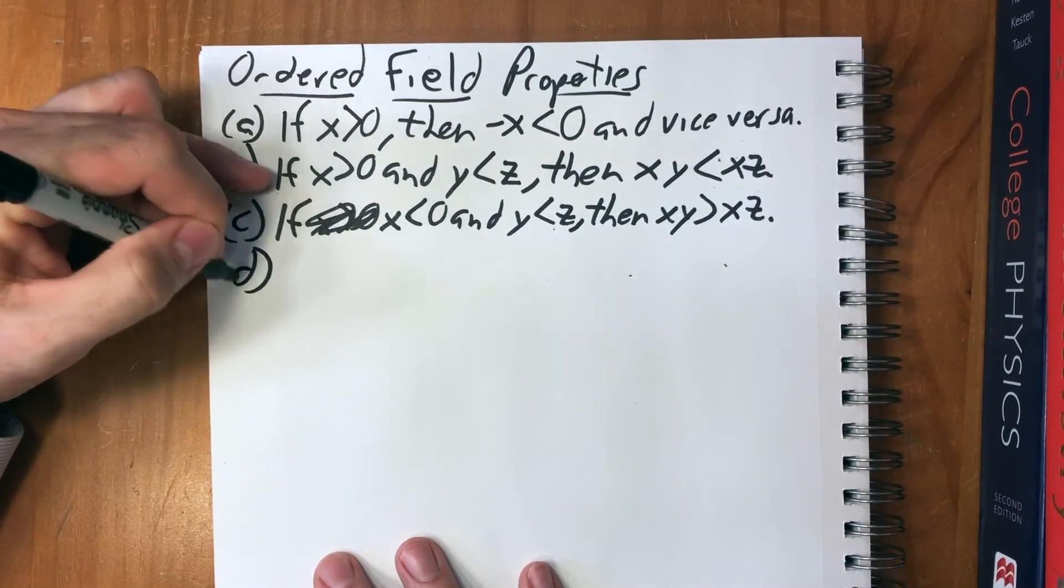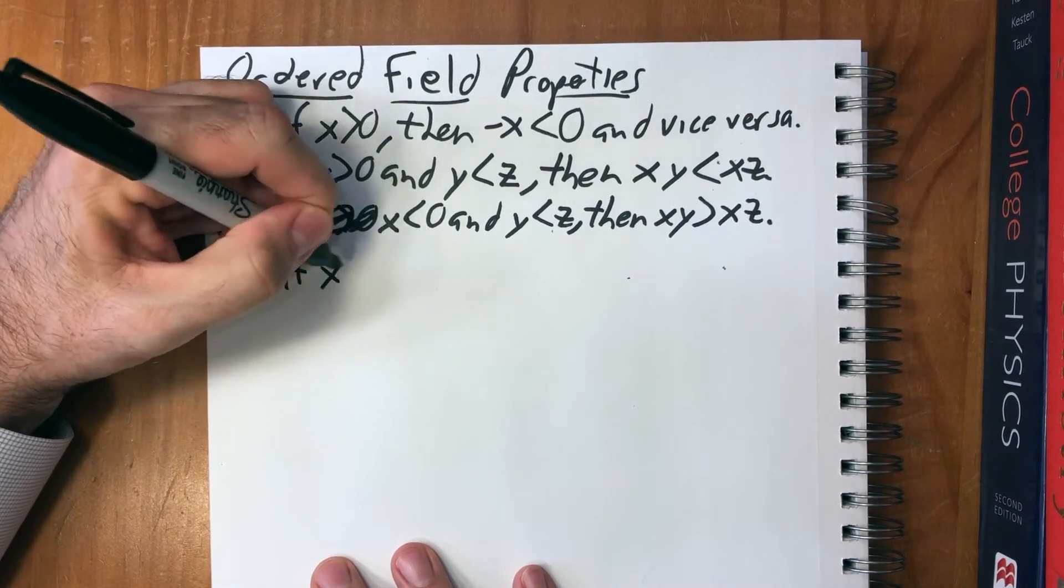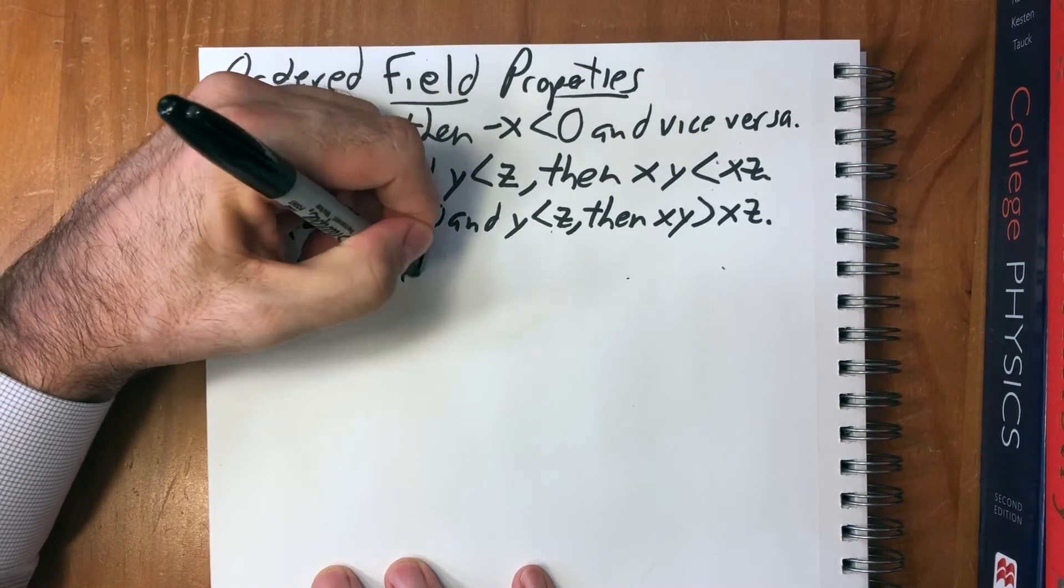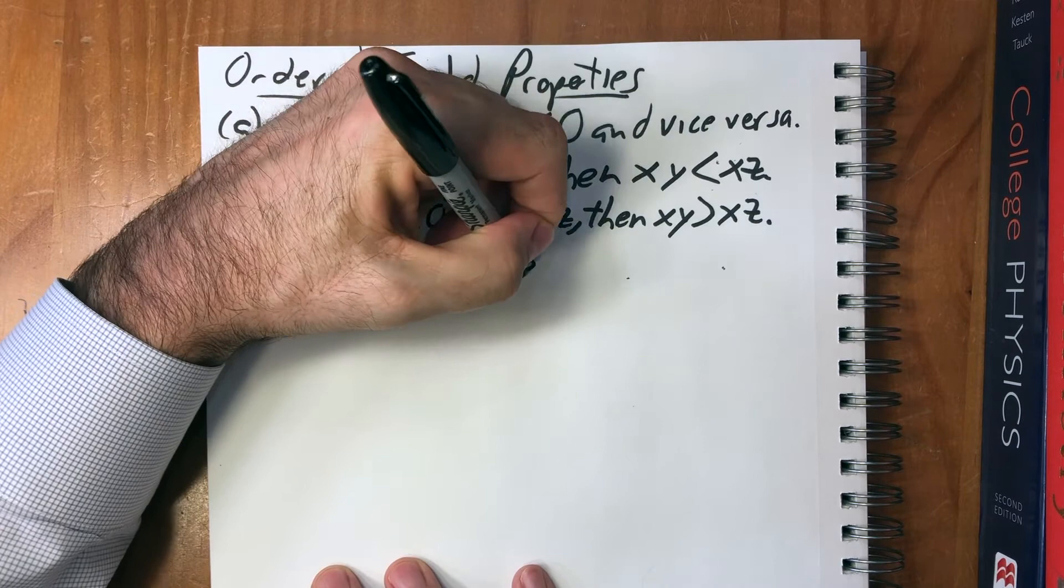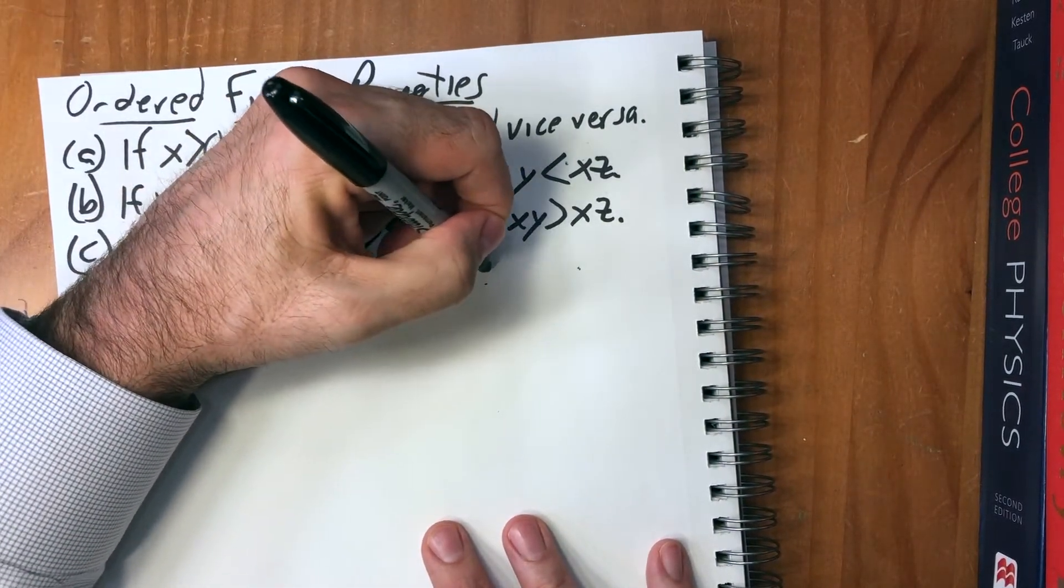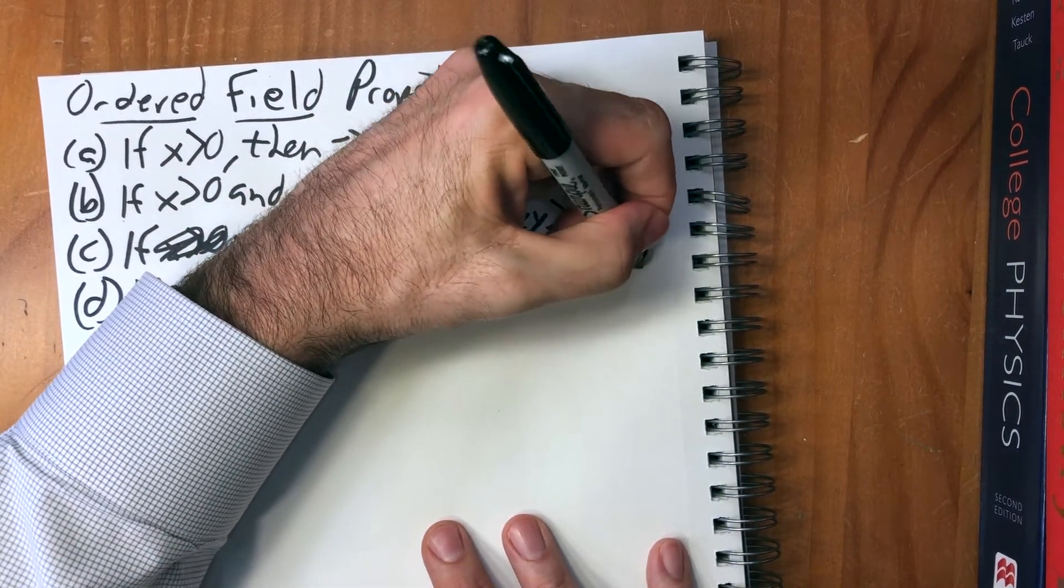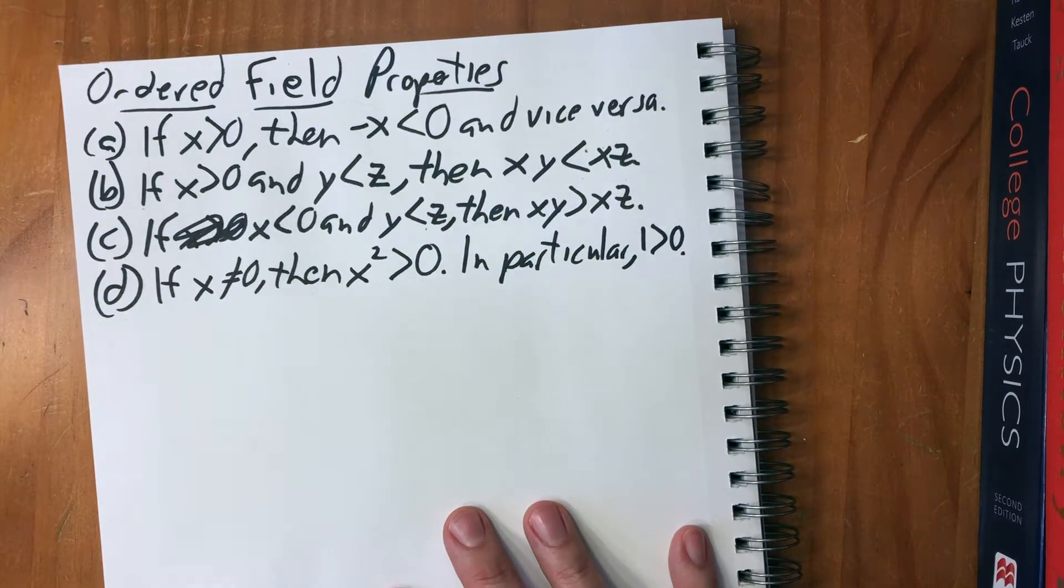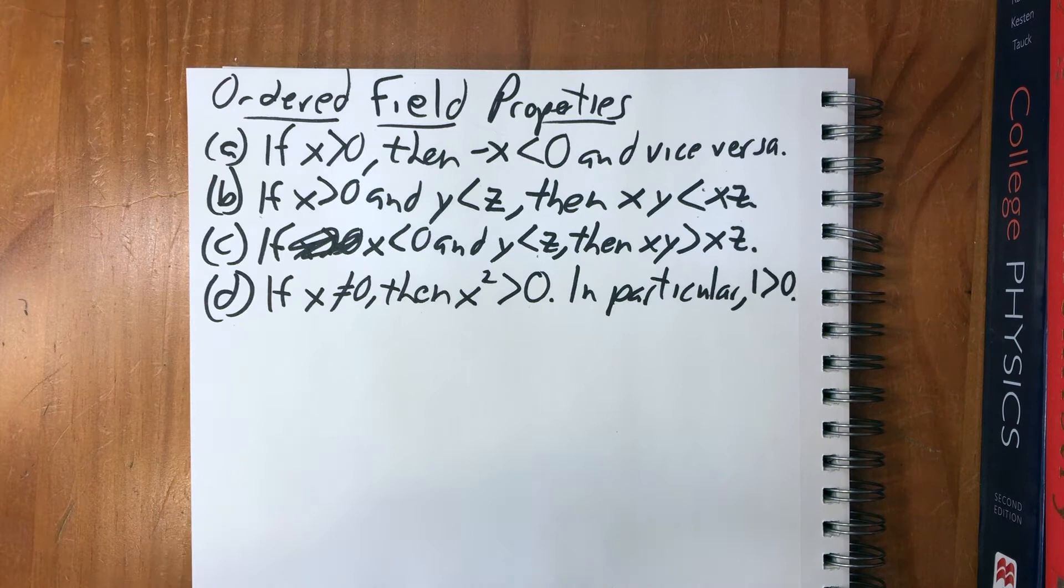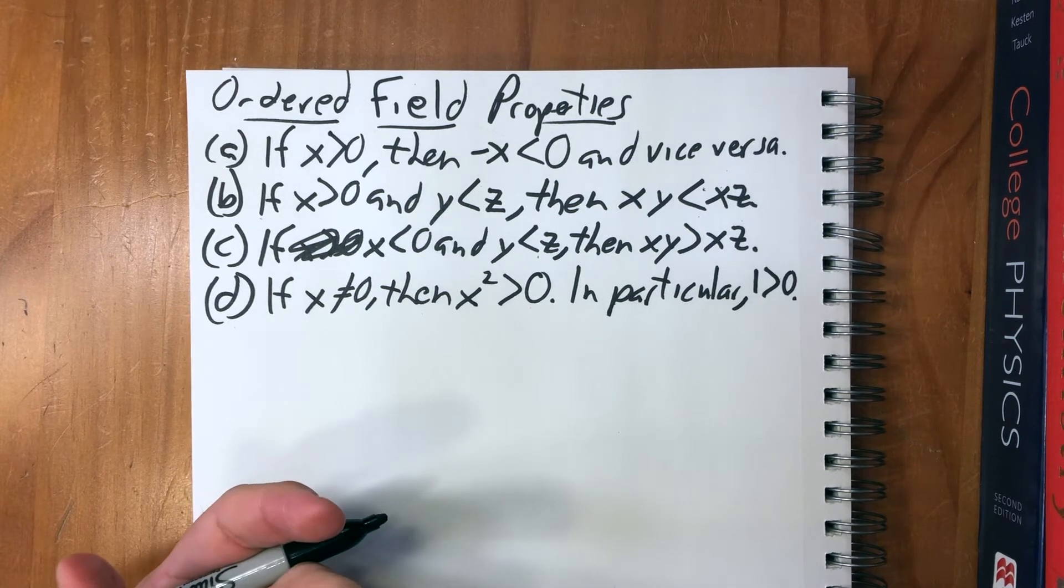D is that if x does not equal zero then x squared is greater than zero. In particular, one is greater than zero.